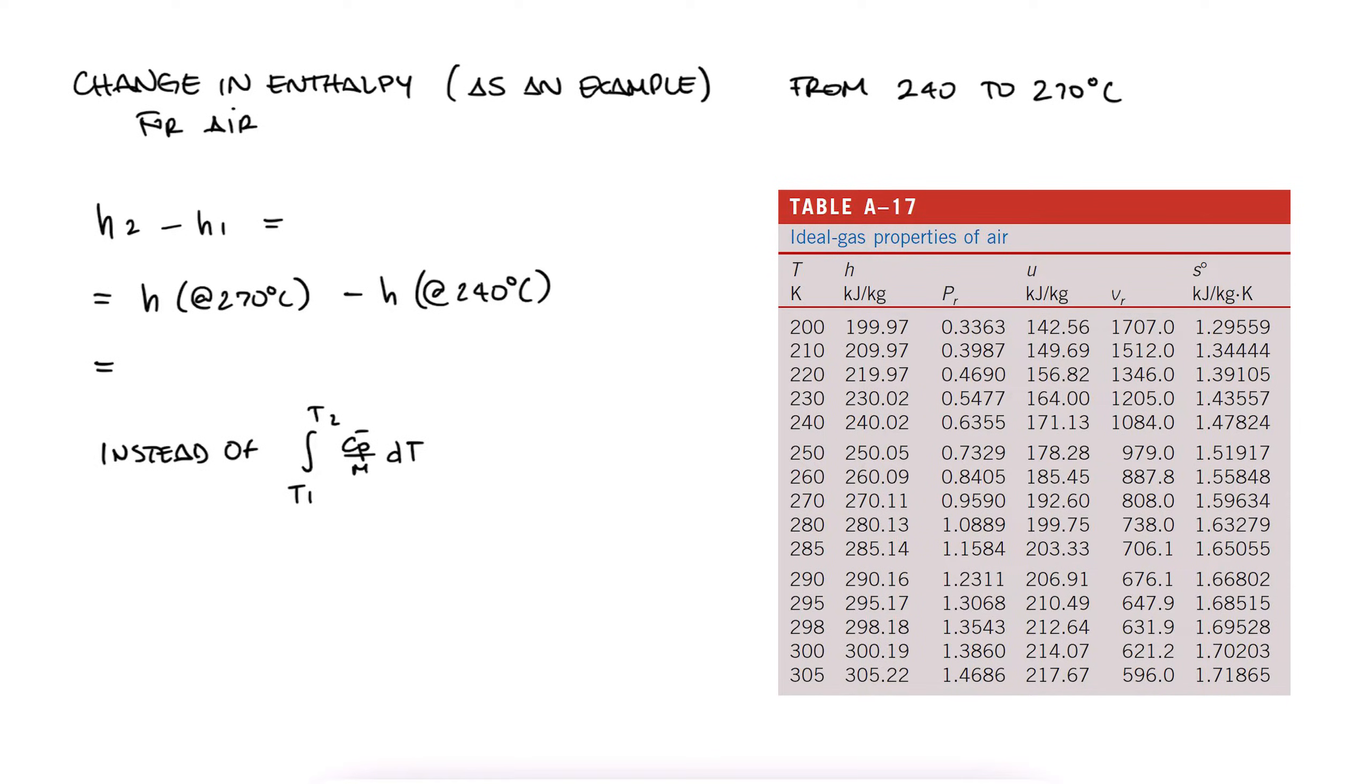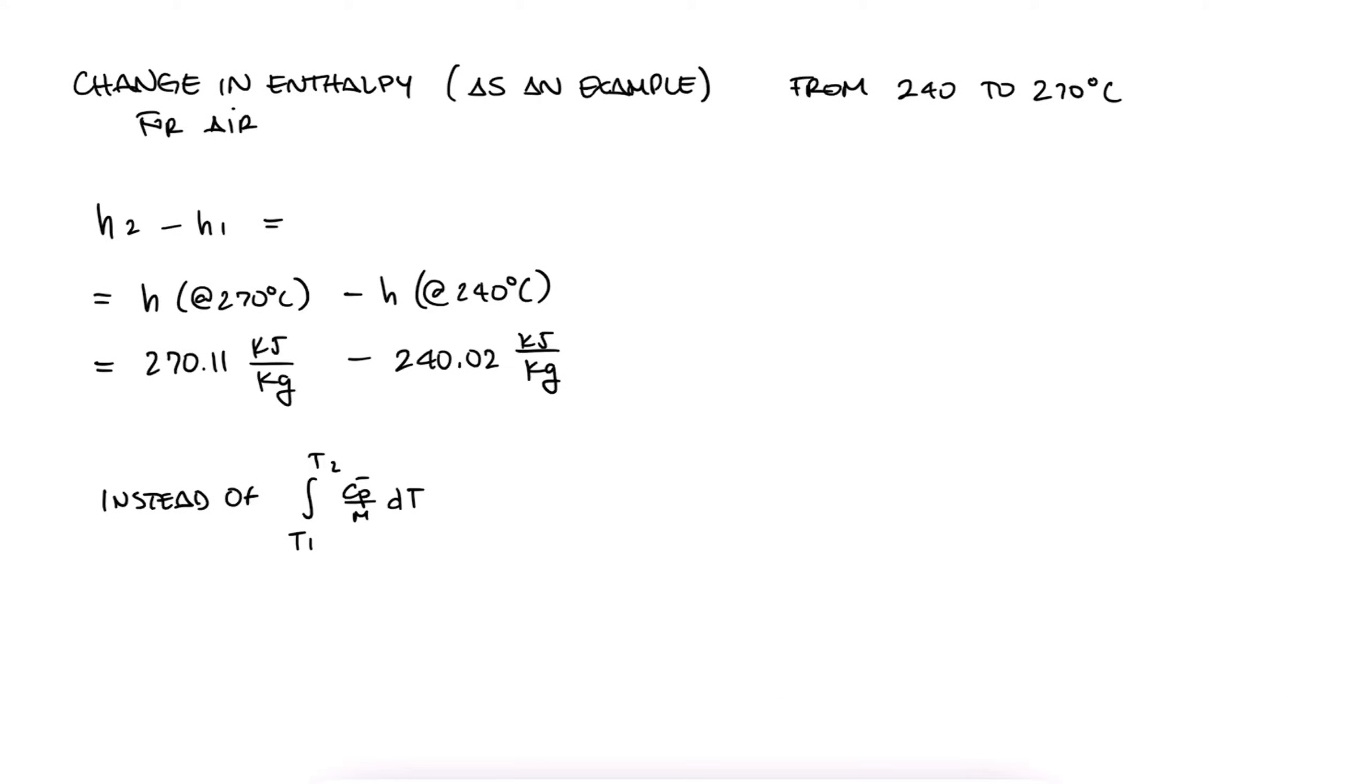Now why does this work? What does H equal to 240.02 kJ per kilogram mean? Because what we stated at the beginning of this lecture was that the specific heat is defined as an amount of heat required to cause a change in temperature, and it therefore needs to be multiplied by a change of temperature, not just a temperature value. So if H equal to 240.02 was obtained by multiplying Cp times T, what does that mean?